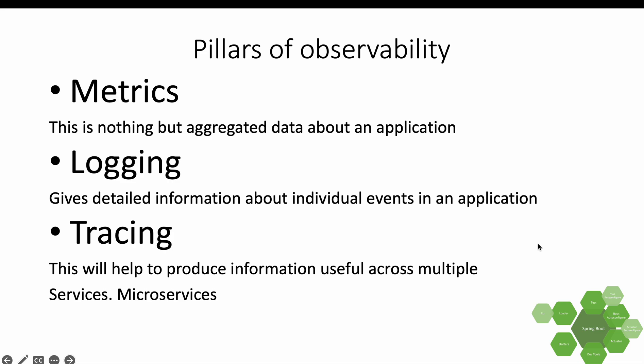We talked about observability — it goes beyond monitoring. Monitoring only captures data and tells us what's happening, but with observability we want to know why that is happening and how to fix it. To better understand observability, it has pillars — categories — of which there are three: metrics, logging, and tracing.